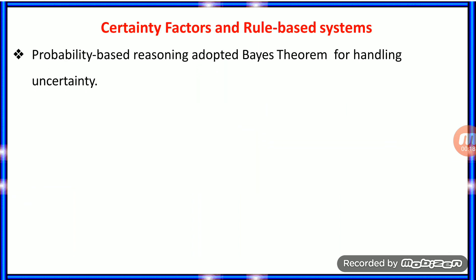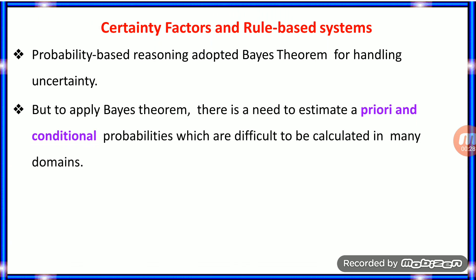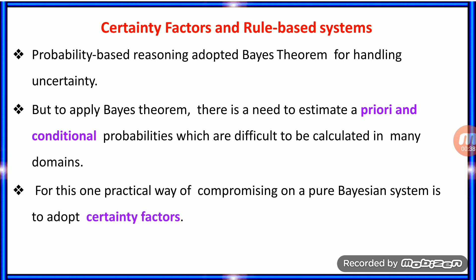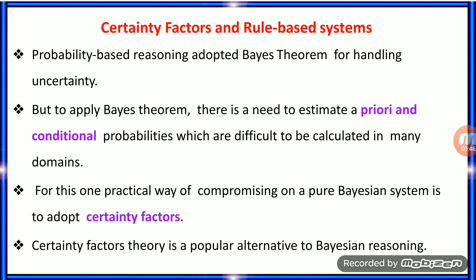As we saw in the previous class, Bayes' Theorem is a probability-based reasoning method used for handling uncertainty. But to apply Bayes' Theorem, the user needs an estimate of a prior and a conditional probability, which is very difficult to calculate in some domains. So, one practical way of compromising a pure Bayesian system is to adopt certainty factors. It is an alternative to the Bayesian reasoning system.